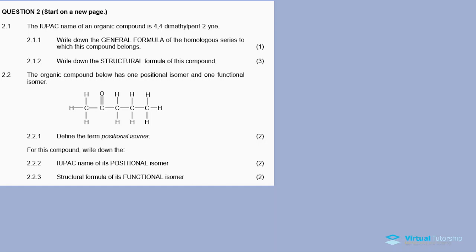In the description below, there are videos I recorded for this question paper as well. Question 2, 2.1: the IUPAC name of an organic compound is 4,4-dimethylpent-2-yne. For 2.1.1, write down the general formula of the homologous series to which this compound belongs. It's an alkyne, so the general formula is CnH2n-2.